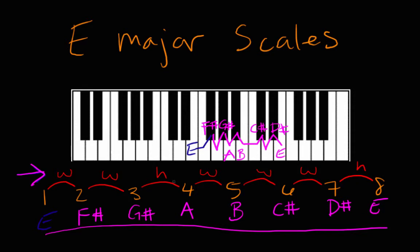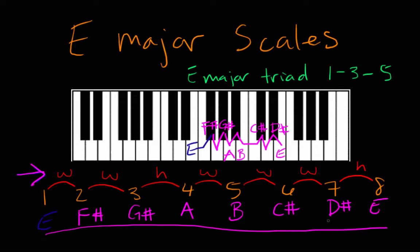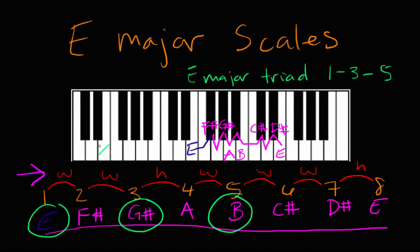One last thing we're going to do in this video is construct the basic E major chord. The E major chord, just like all major chords, is just a triad — the E major triad. A triad is a chord made up of three notes, and the E major triad is made up of the notes one, three, five — referring to the note numbers in the scale. So we're going to circle E, circle G sharp, and circle B, because E is the first note, three is G sharp, five is B. So the E major triad is E, G sharp, and B. If we played it on the piano, we would play these three notes simultaneously, and they would produce the E major triad, or the E major chord.